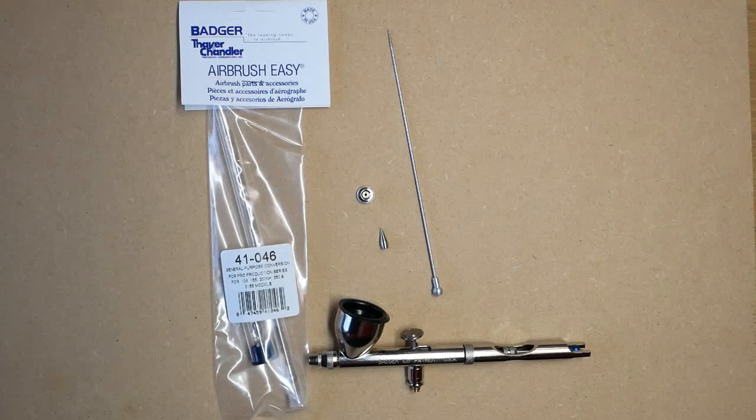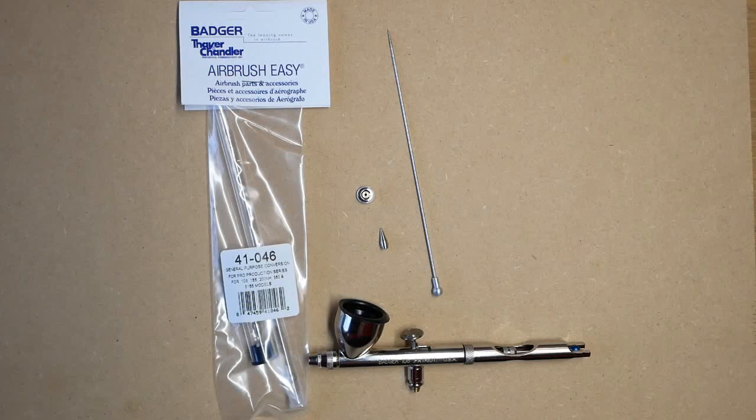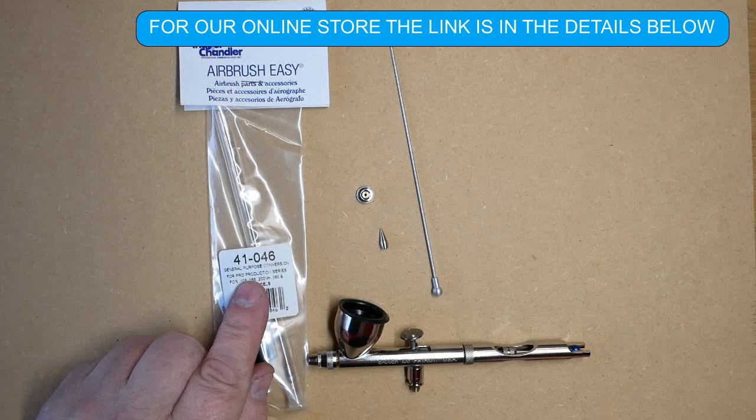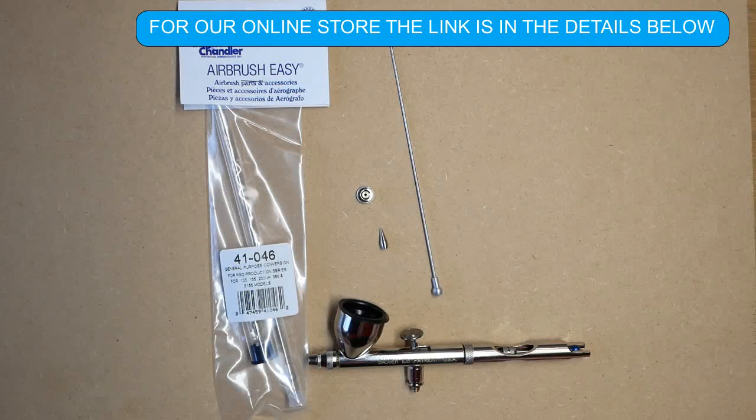In this video we're going to be talking about the general purpose conversion kit for the Patriot 105, which is the 0.7 setup. The conversion kit itself is part number 41046, which is available in our store as well as all the other spares for the airbrush.